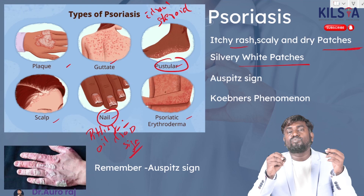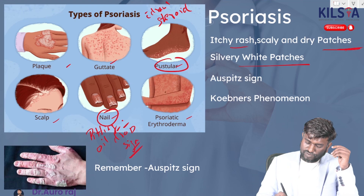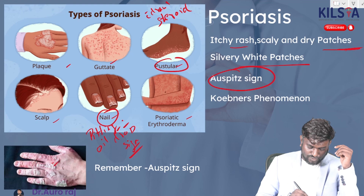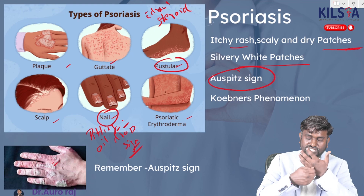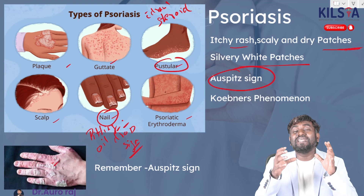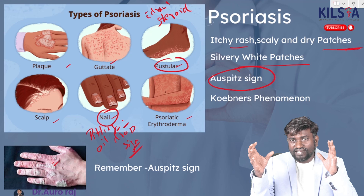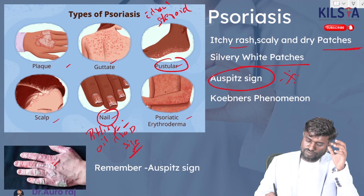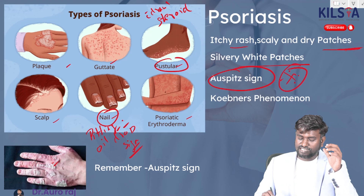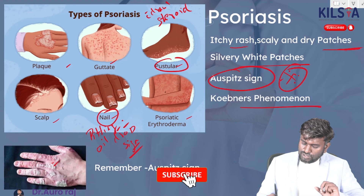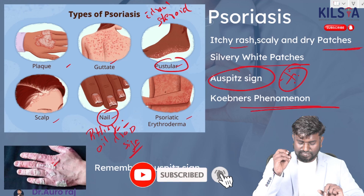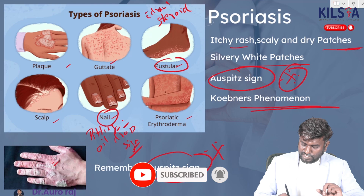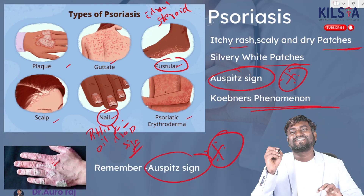Other important points to remember in psoriasis include Auspitz sign — when you scratch a psoriatic plaque you see pinpoint bleeding. Also remember the Koebner phenomenon. Both Auspitz sign and the Koebner phenomenon are very important for psoriasis.